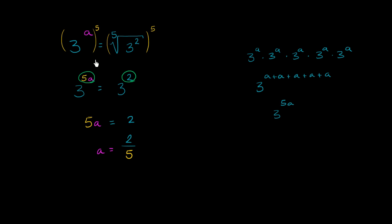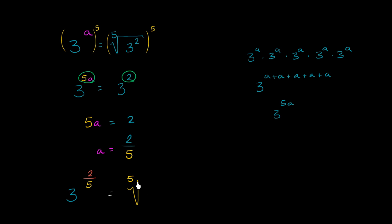This is an interesting result, and what's neat about this example is it shows the motivation for how we define rational exponents. Putting it back into the original expression: 3 to the 2 over 5 power is equal to the fifth root of 3 squared. Notice — the denominator here is the root, so it's the fifth root. If you take base 3, square it, but then take the fifth root of that, that's the same thing as raising it to the 2 fifths power.